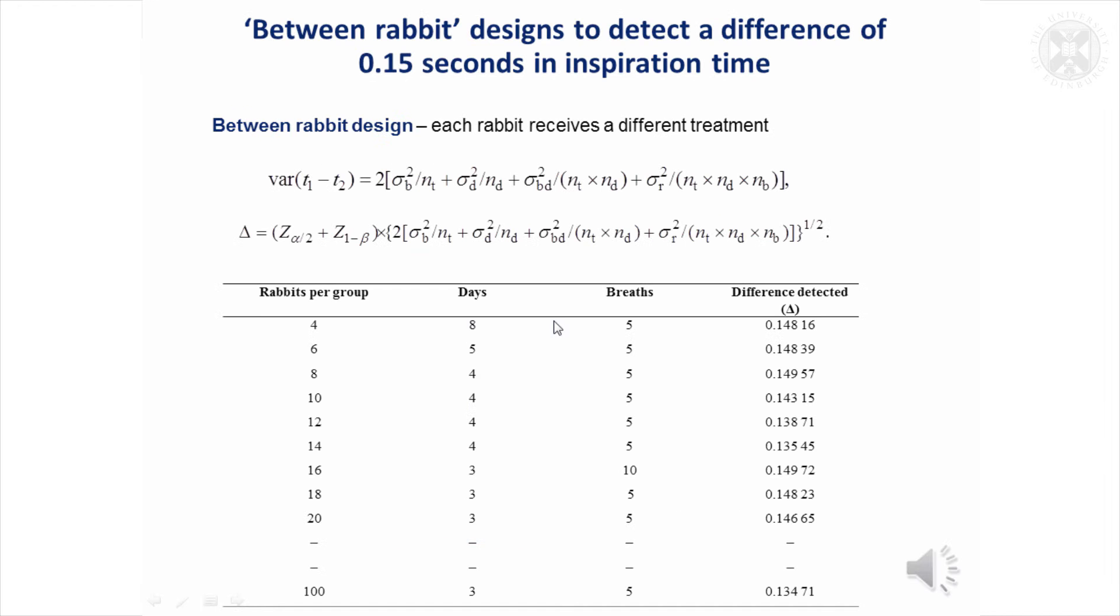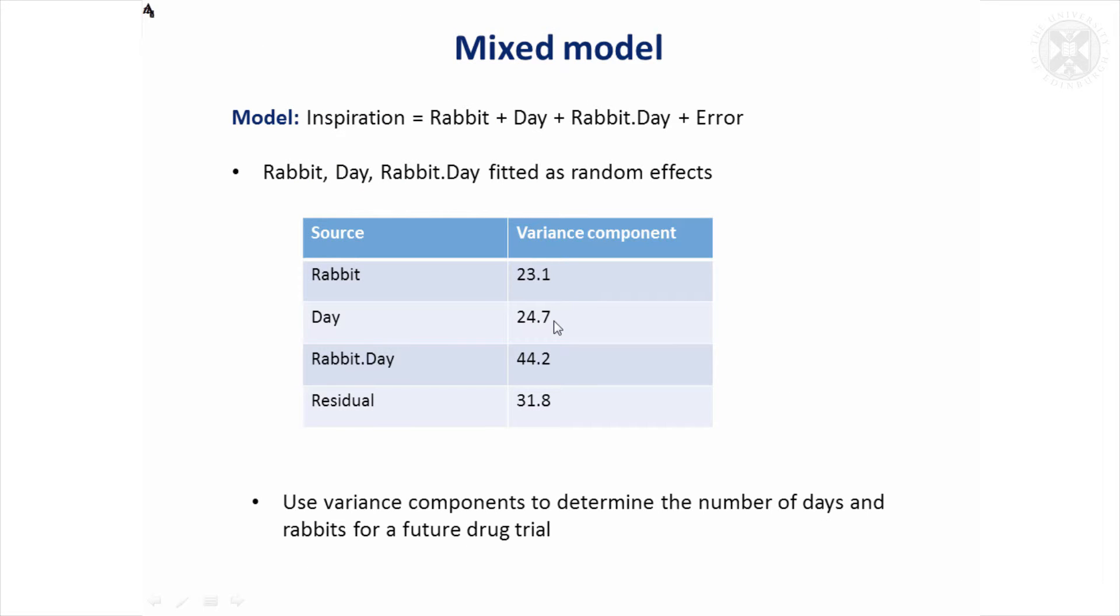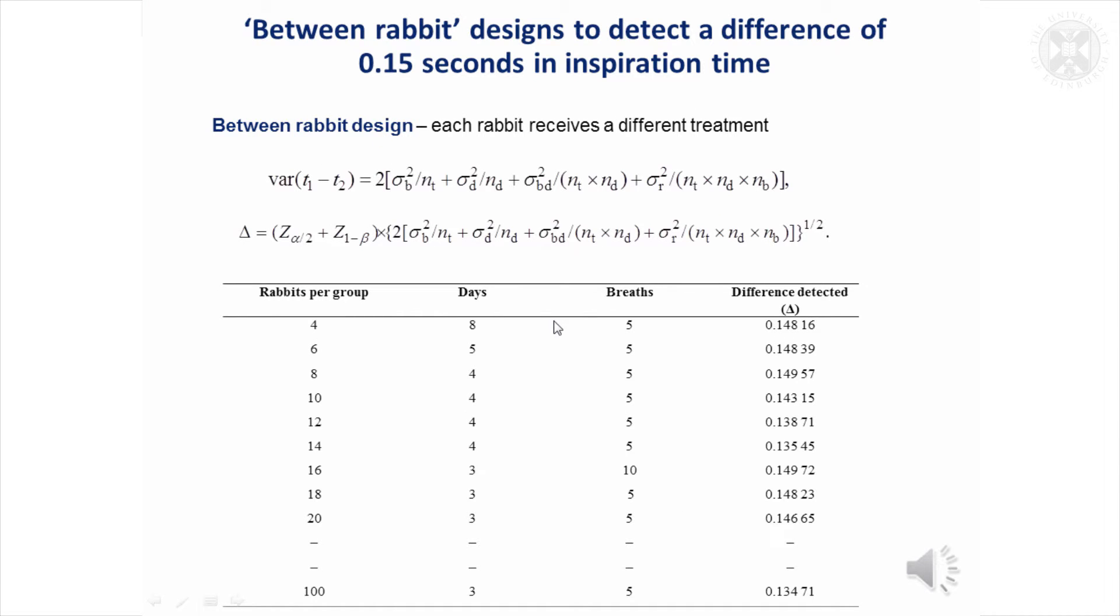Don't worry too much about the formulae, but from these variance components, you can use them to define formulae for the difference in treatment effects. If you were going to have two groups of rabbits and see how different their mean values were, you can define the overall variance in terms of all those variance components that we looked at.